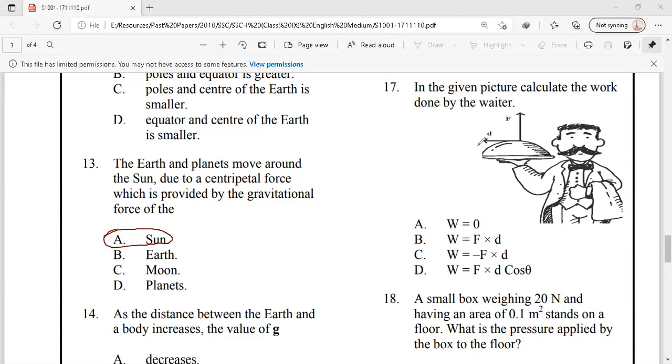Question number 17. What will be the magnitude of the work done? As we can see, force and displacement are perpendicular, they are 90 degree. So in that case, work is always 0. Option A is our right answer.